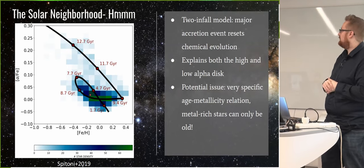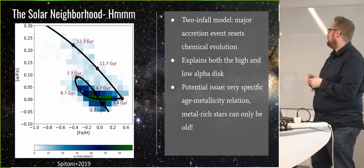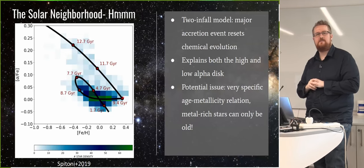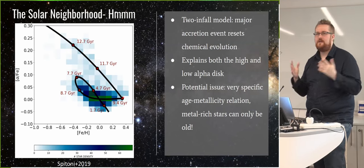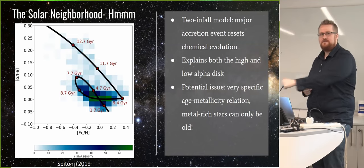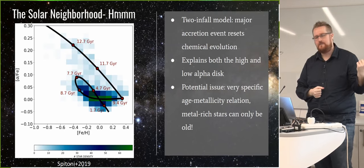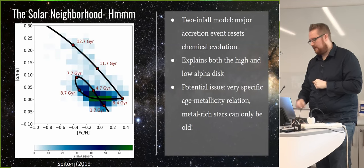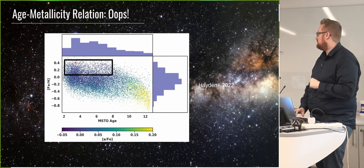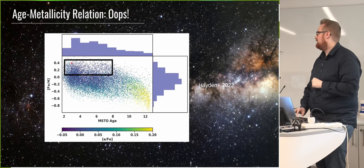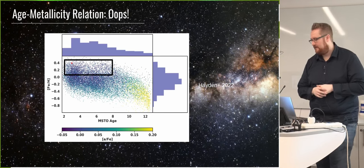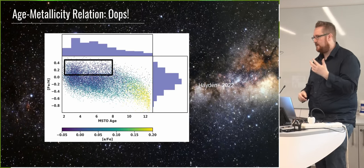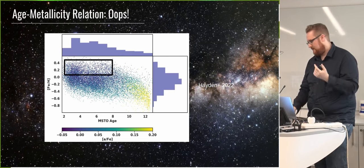The potential issue with the two-infall model is that it predicts a very specific age-metallicity relation. If you look at metal-rich stars — those at three times solar metallicity — they can only be old, because once you dilute the metallicity with a major merger, you'll never make a metal-rich star again. But if you look at the data in GALAH, you can see we have a ton of very metal-rich stars, and they're all very young. So the two-infall model doesn't work. Something else must explain how you get these two tracks in the solar neighborhood.